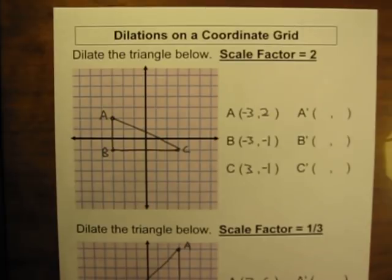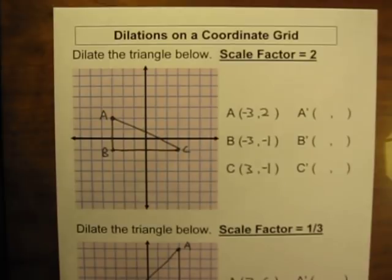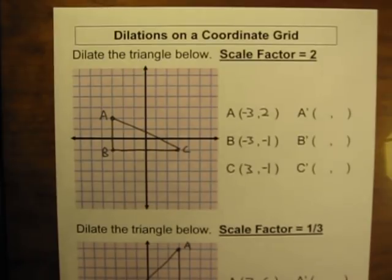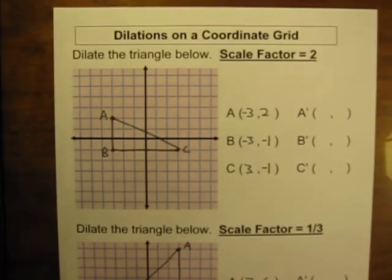In each of those other three types of transformations, after you perform the transformation, whatever object it was that you changed or moved, it's always the same size. When you reflect a shape, the reflected image remains the same size — the original image and the new image are congruent. When you rotate a shape, it does not change size, so the original and rotated images are congruent. With a translation, if you just slide a shape, you're not changing its size, so the original object and new image are congruent figures.